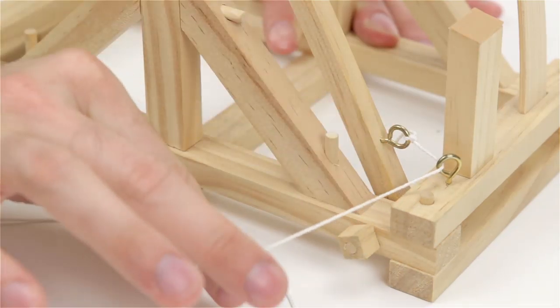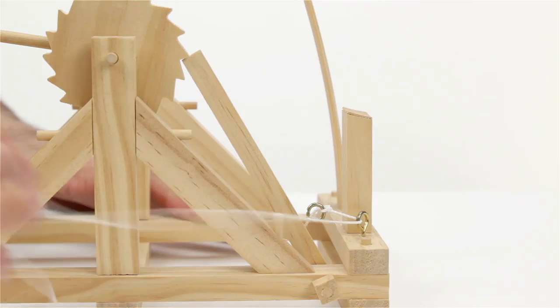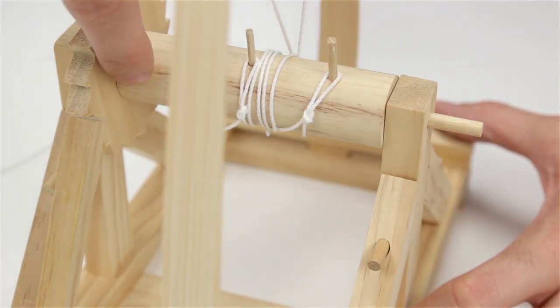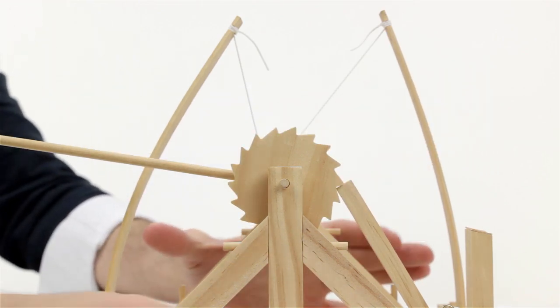Then you pull the release string, which in turn will pull out the release arm, freeing the ratchet connected to the winding drum, which is under incredible pressure due to being wound up by this string connected to these tension arms.